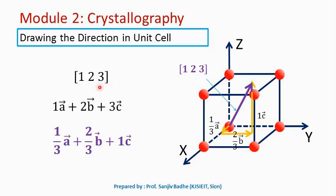Now let us try to draw direction [1 2 3]. This direction is nothing but the direction indicated by a vector 1 a-bar plus 2 b-bar plus 3 c-bar. If we try to draw this vector in the unit cell, it will not fit inside because 2 b-bar will be greater than 1 b, and 3 c-bar is also greater than 1 c. So this vector will not fit inside the unit cell.